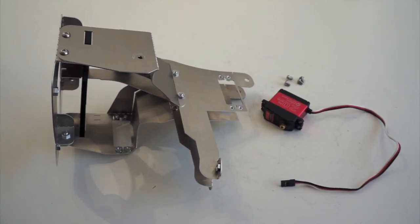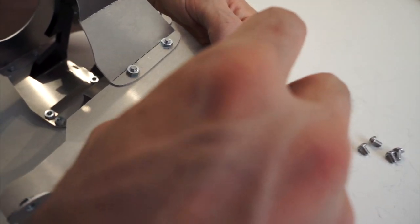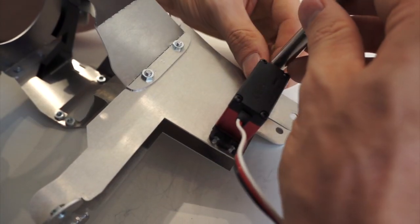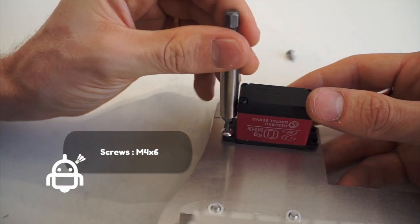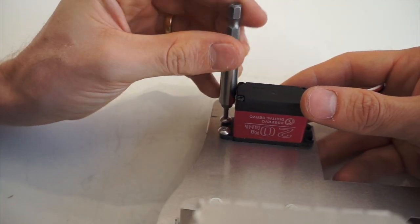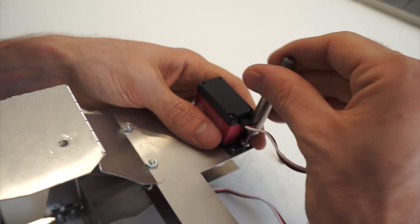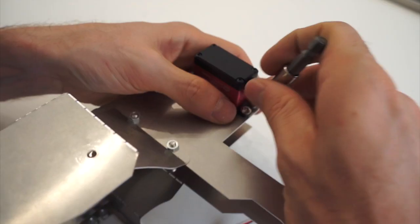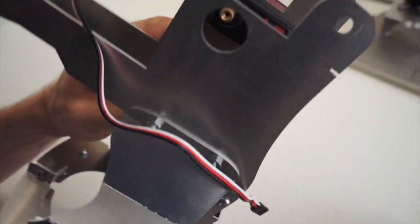Servo motors, so it's really easy. The nuts are already inserted in the metal parts so we just have to screw the servo motor as shown. Just pay attention to the servo's orientation, it has to be oriented like this.